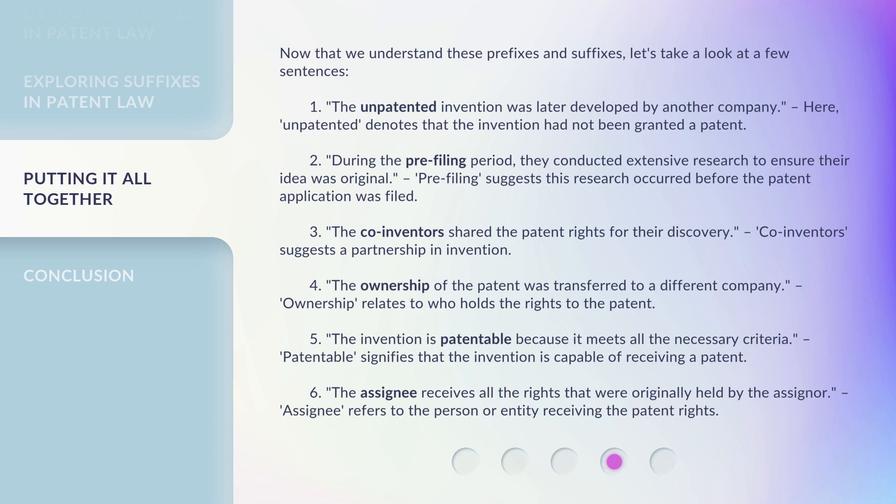4. The ownership of the patent was transferred to a different company. Ownership relates to who holds the rights to the patent. 5. The invention is patentable because it meets all the necessary criteria. Patentable signifies that the invention is capable of receiving a patent. 6. The assignee receives all the rights that were originally held by the assigner. Assignee refers to the person or entity receiving the patent rights.